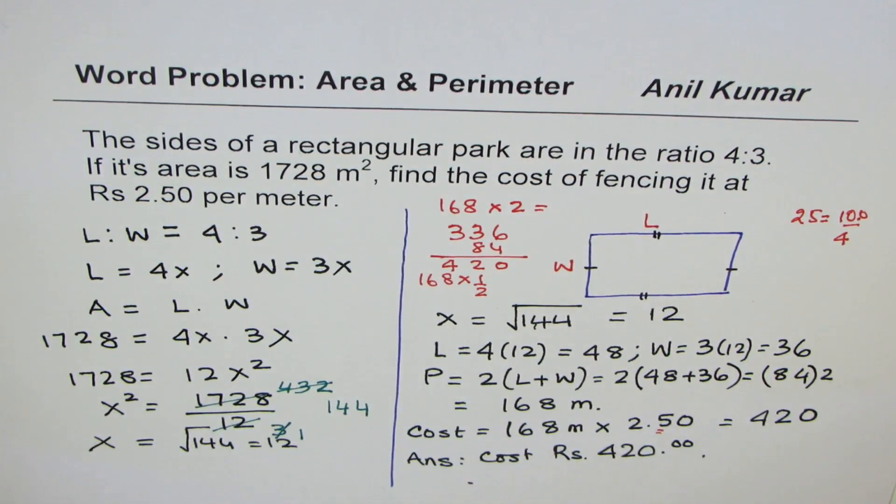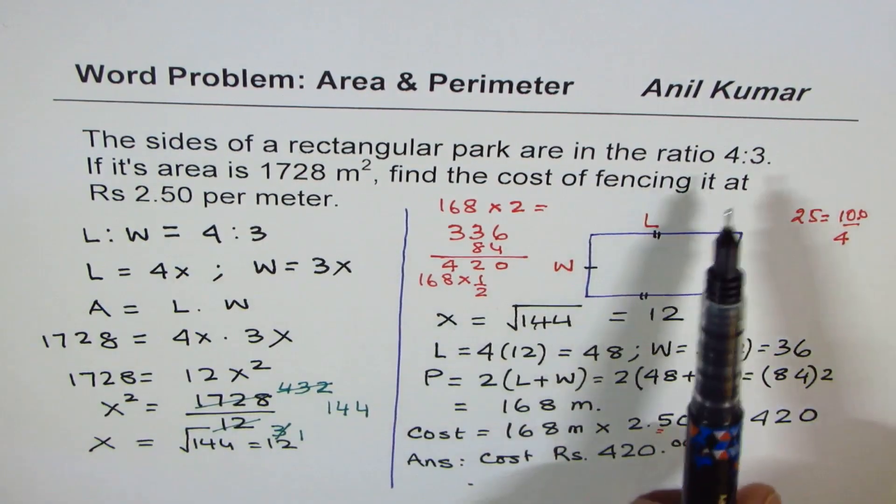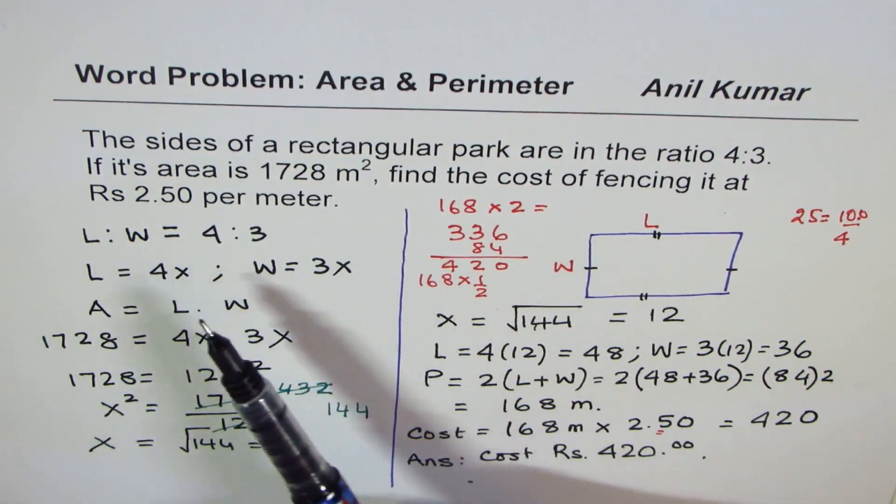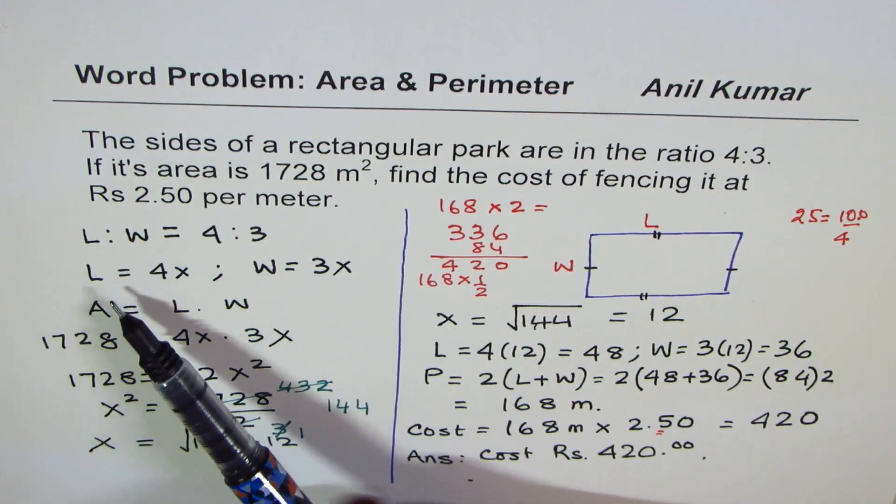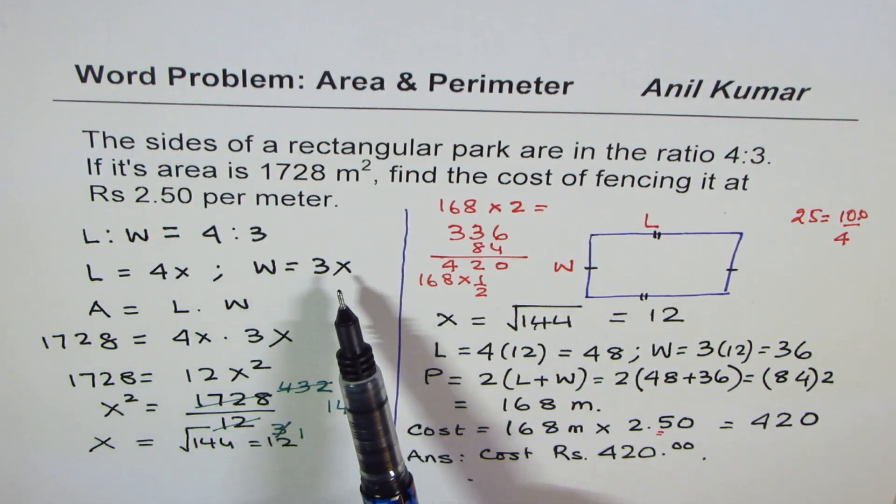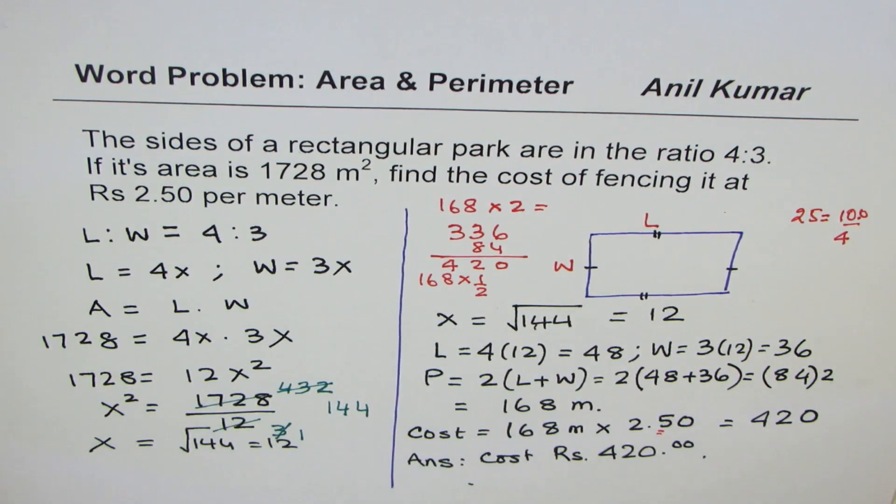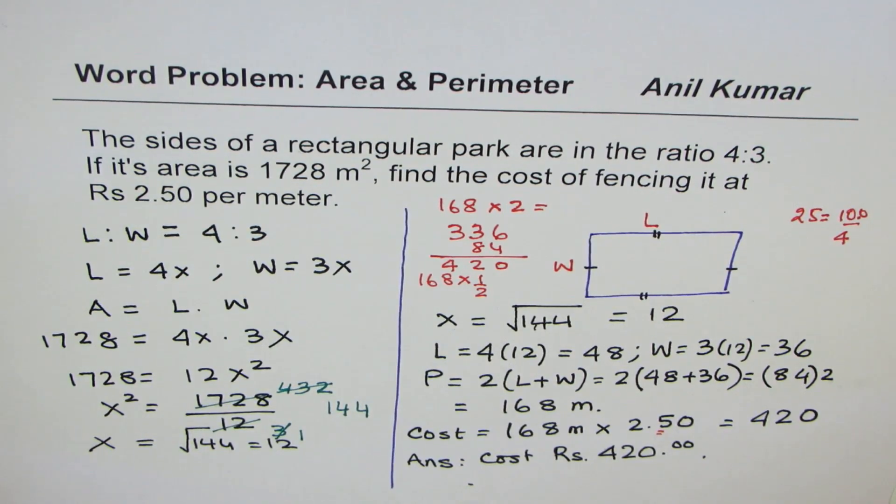So that is how such problems can be solved. The key here is whenever the ratios are given to us, we can always say that the value is 4x and 3x. So that becomes the ratio. And now I think straightforward. Thanks for sharing such a question, and I hope that helps. Thank you, and all the best.